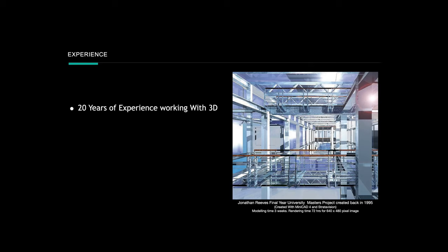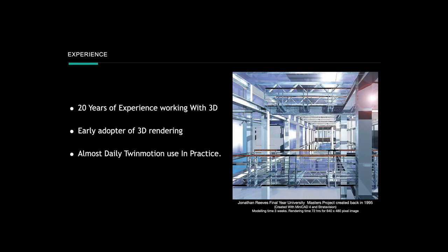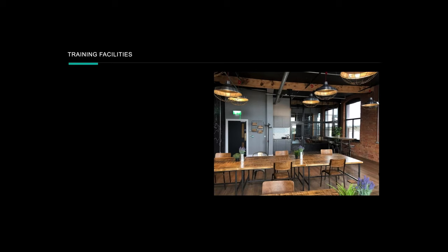I like to remind myself of where I started. This was an image I created as a master's student back at Sheffield University in 1995. It took three weeks to model, and the rendering time was about 72 hours for a 640 by 480 pixel, very pixelated, low quality image. But I was hooked — I was really pleased with this three-dimensional image. So I like to think I'm an early adopter of 3D rendering, and these days I use Twinmotion on most projects.